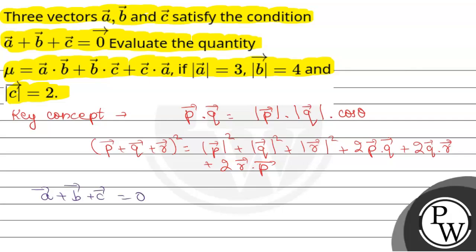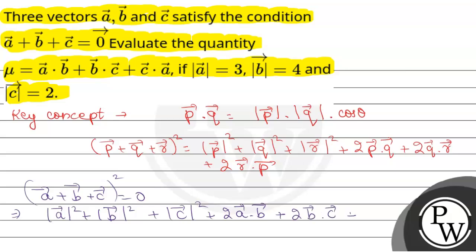We have been given that vector a plus vector b plus vector c equals zero. So we are squaring both sides. This gives: mod of vector a whole square plus mod of vector b whole square plus mod of vector c whole square plus 2 times vector a dot vector b plus 2 times vector b dot vector c plus 2 times vector c dot vector a is equal to zero.